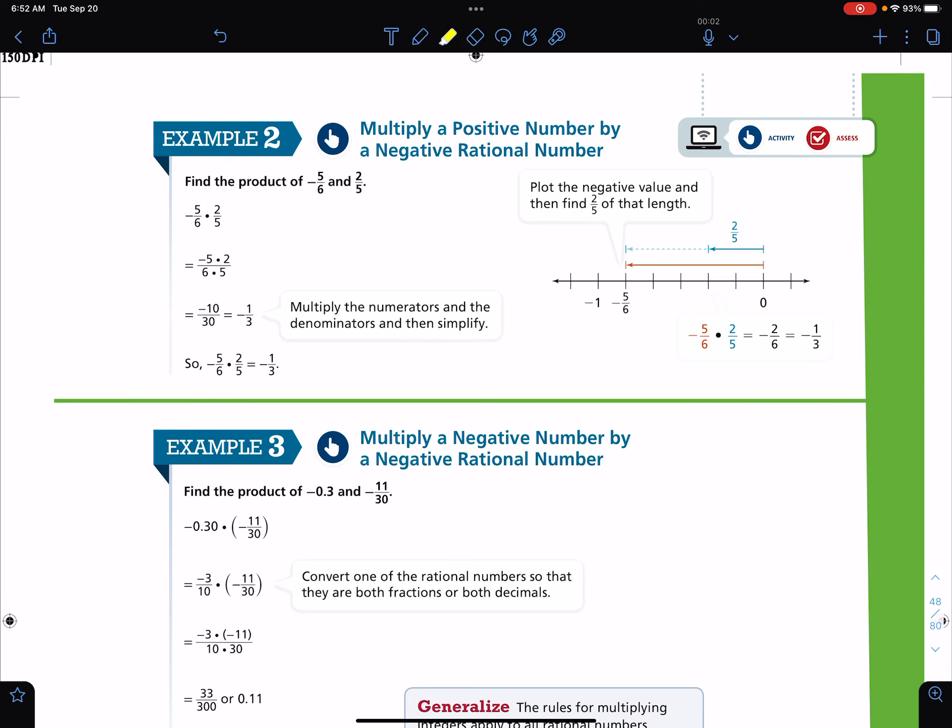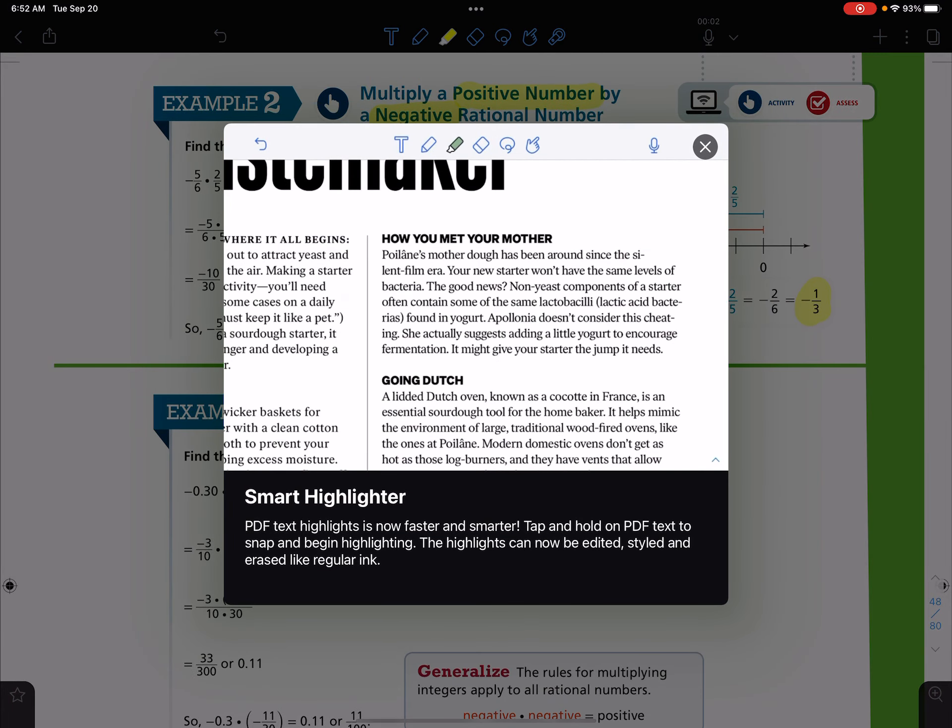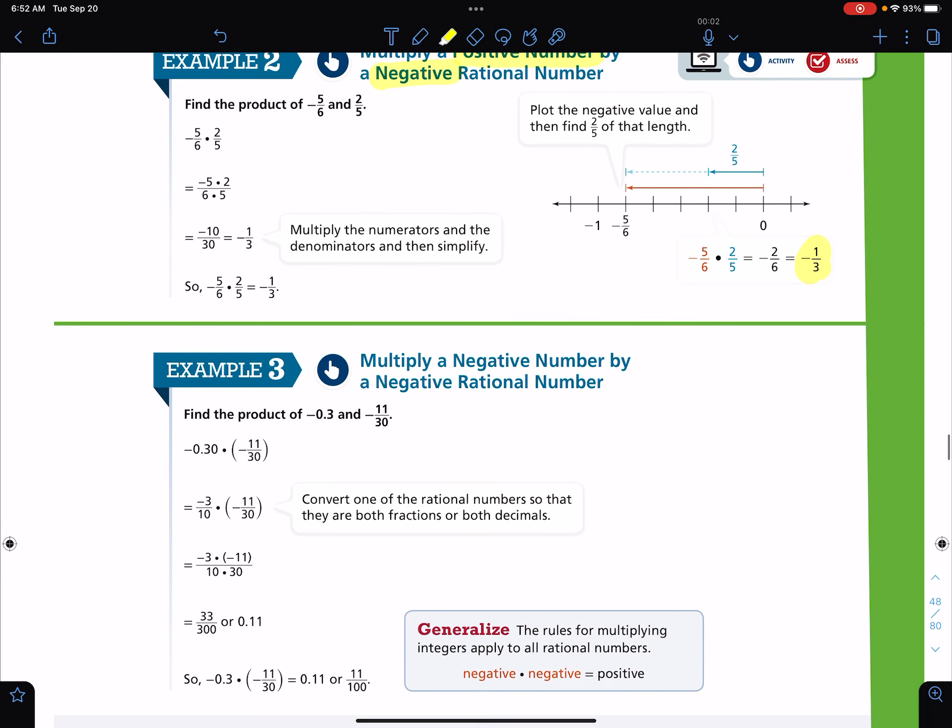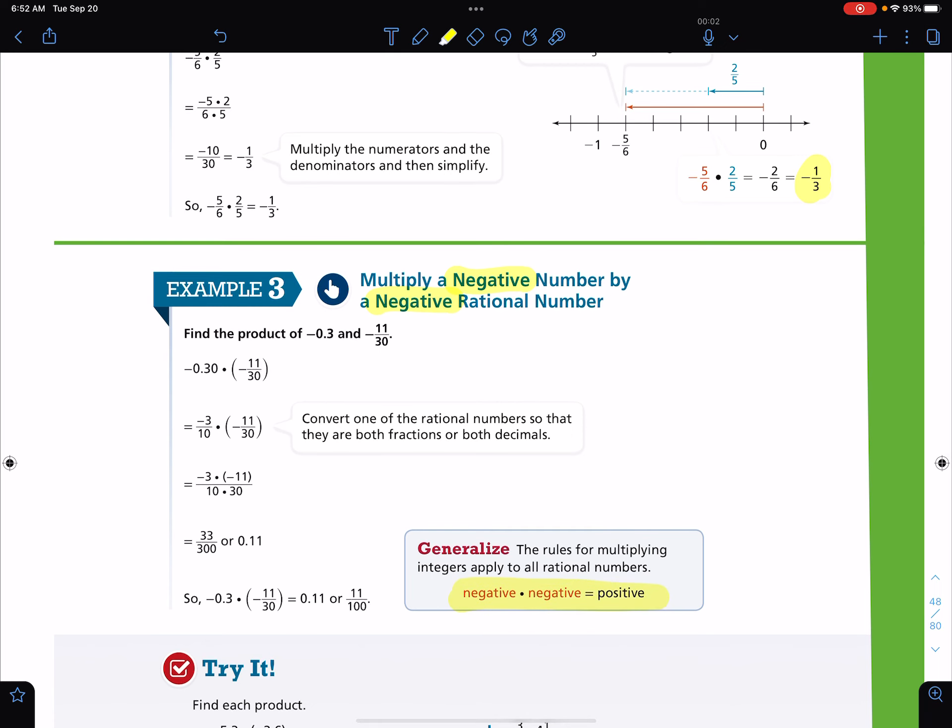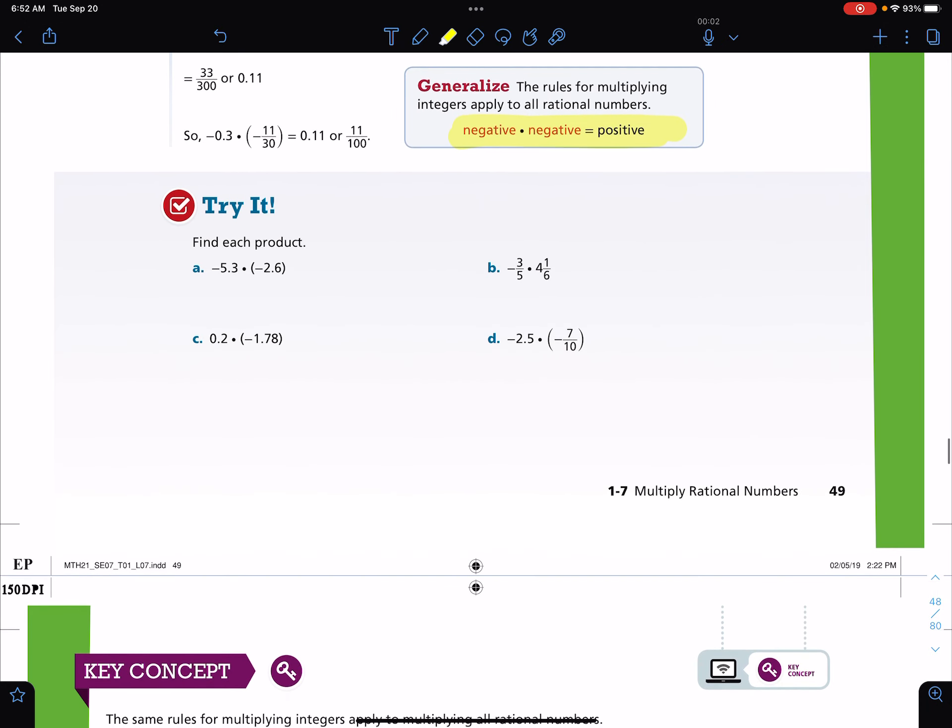When we multiply with fractions, those same rules are going to apply as well. And of course, see a positive by a negative will end up being a negative. I don't know what just happened there. An example through, a negative times a negative will end up being a positive. So again, those are the same rules that we've been dealing with. We're just showing that it also works when you are multiplying fractions and decimals. So we got to do the try it and this might take me a while.